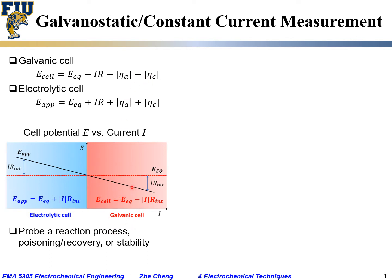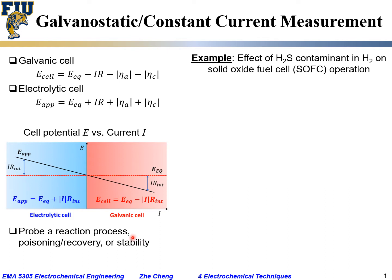As mentioned, you can measure voltage at a fixed current to probe a reaction process — a half-cell reaction of interest — including its poisoning or recovery by certain species, or the stability of that reaction. As an example, we want to check the effect of H₂S (hydrogen sulfide) as a fuel contaminant in pure hydrogen on solid oxide fuel cell (SOFC) operation. An SOFC is a type of electrochemical cell that converts chemical energy stored in fuel such as hydrogen to electricity.